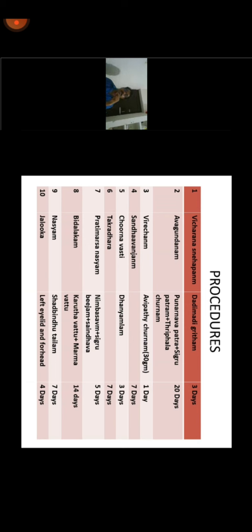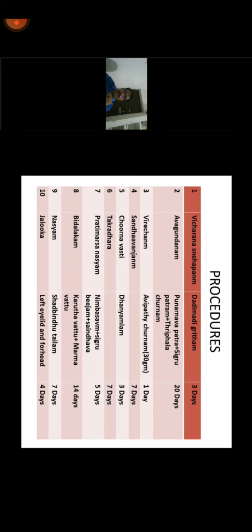Takradhara was done; then avagundana, churna vasti, and takradhara are all rukshana treatments. After that, pratimarshanasya was started — considering the ostiomeatal complex blockage. The pratimarshanasya was with nimba savam and shigri bijam and saindhava: shigri bija crushed into pieces, wrapped in cloth as a bolus, put in approximately 20 ml nimba savam overnight, then next morning crushed with saindhava taken for pratimarshanasya. This is a very good tikshna nasya for resolving sinus blockage.